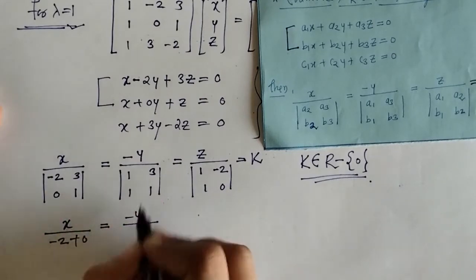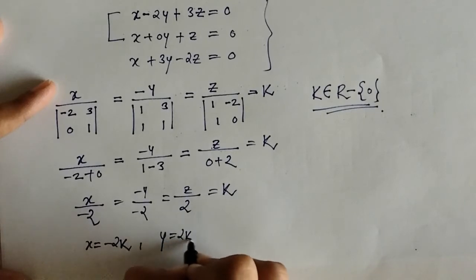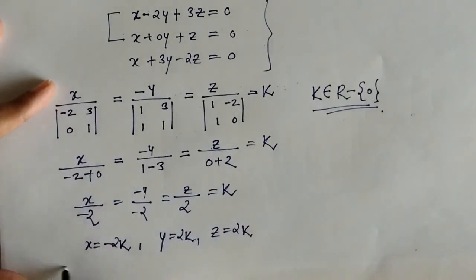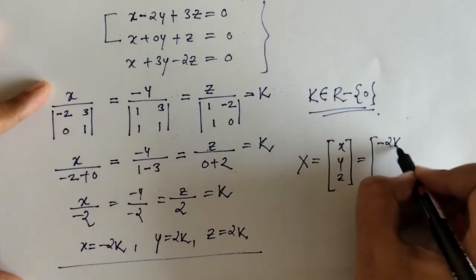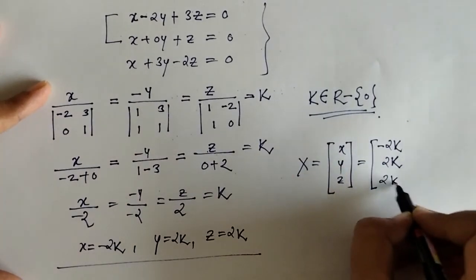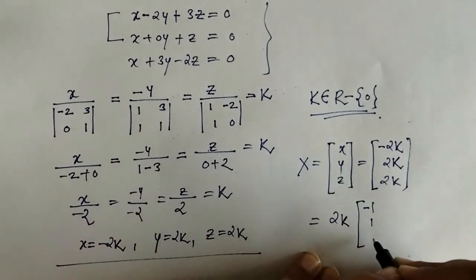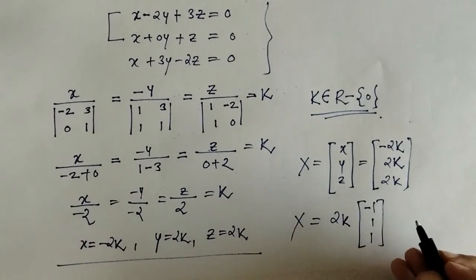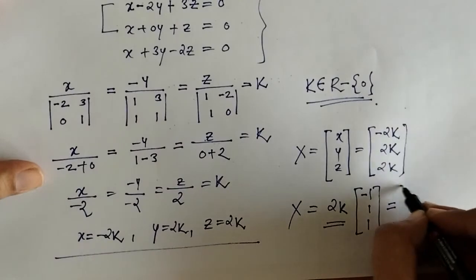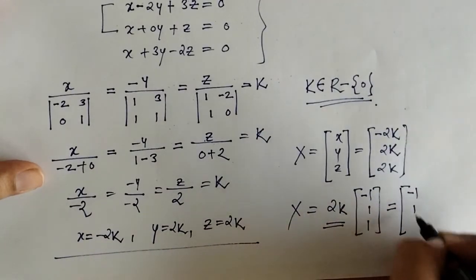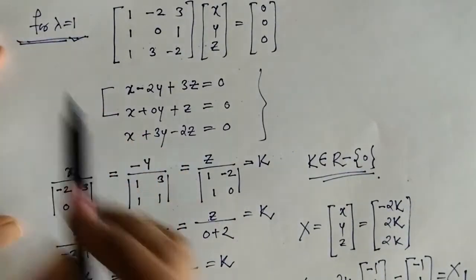Simplifying, we get x equals minus 2k, y equals 2k, and z equals 2k. Writing this as a column vector and taking 2k outside, our required first eigenvector X1 for lambda equals 1 is the vector [minus 1, 1, 1].